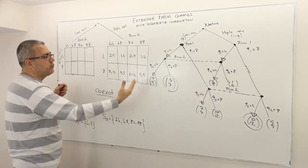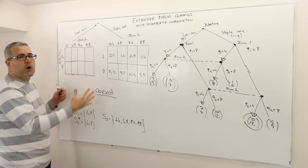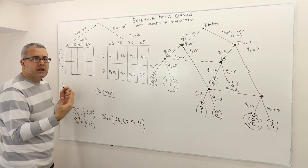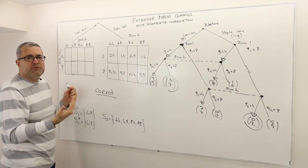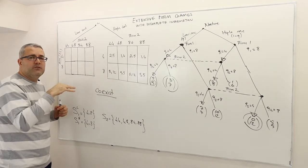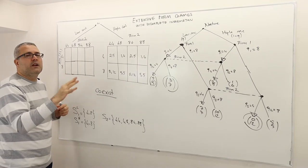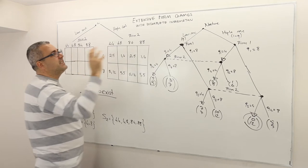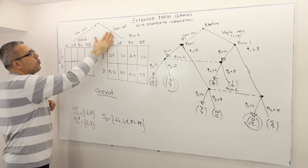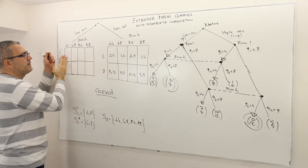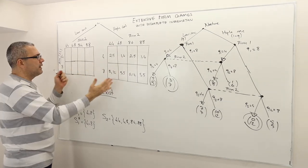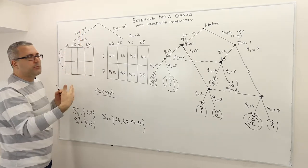When we write the normal form or strategic form representation, yes, we do have two matrices, but it's not because one player chooses one matrix over the other. It is nature that determines which matrix will be realized. This is exactly what we did in Bayesian games — if you don't remember, please go back to those lecture videos. This idea always comes from the incompleteness of information: nature determines the type of player one, and so firm two plays either with low type firm one or high type firm one.